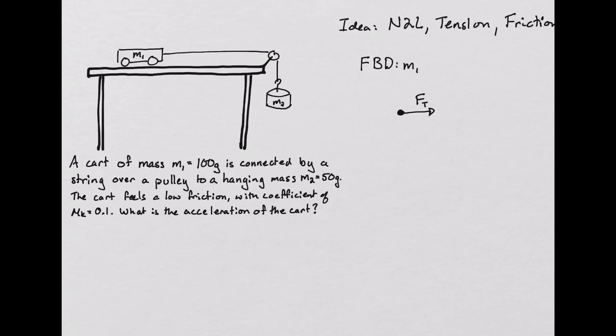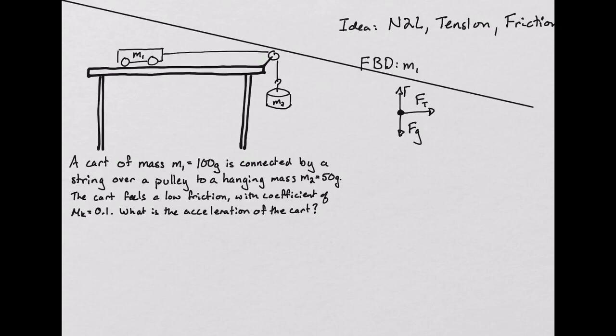There will be a force of tension pulling along the direction of the rope. Also, we recognize that in all cases we are going to have a force of gravity acting on all objects that points downward. Similarly, there will be a normal force pointing in the upward direction, and in this case we know that there is going to be a force of friction resisting that motion of the cart.